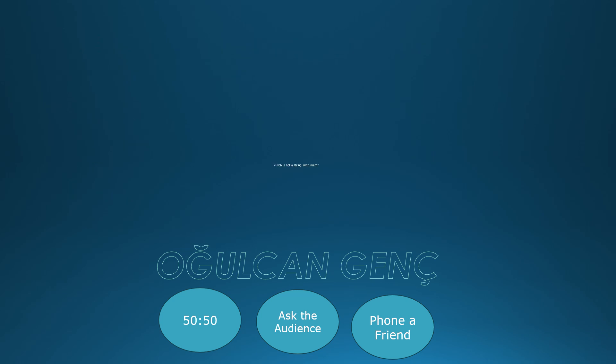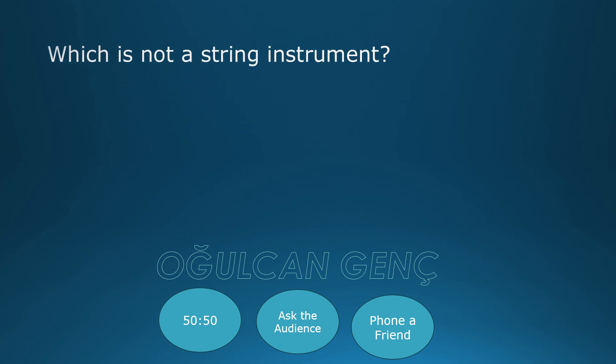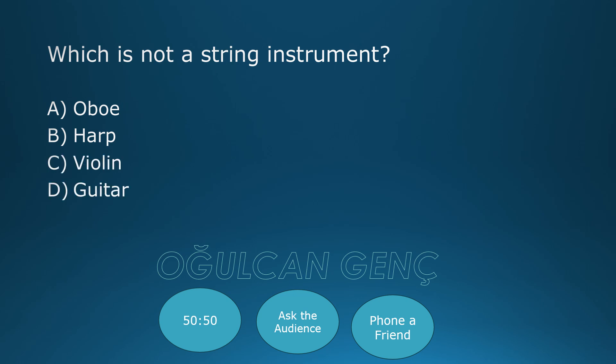Which is not a string instrument? Oboe, Harp, Violin, Guitar. Final answer: Violin, C. Correct answer is Oboe.